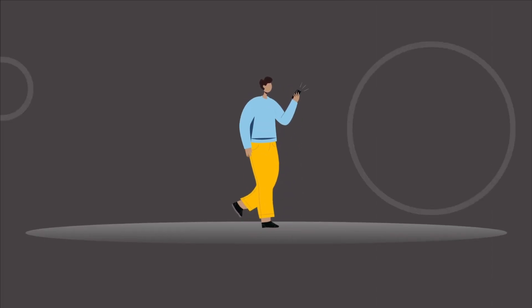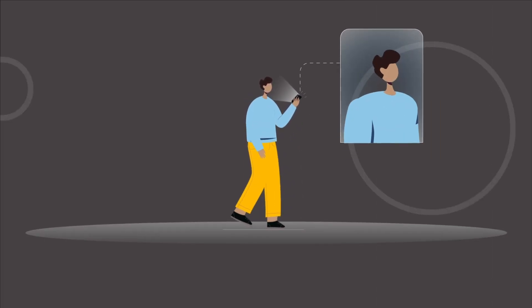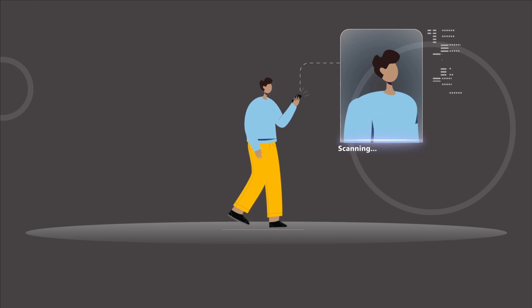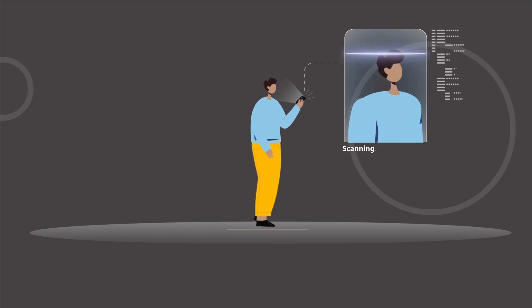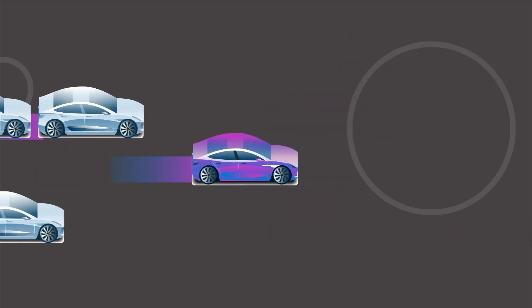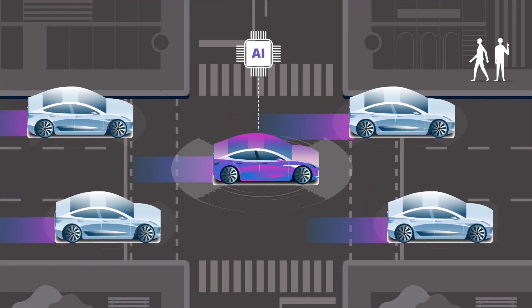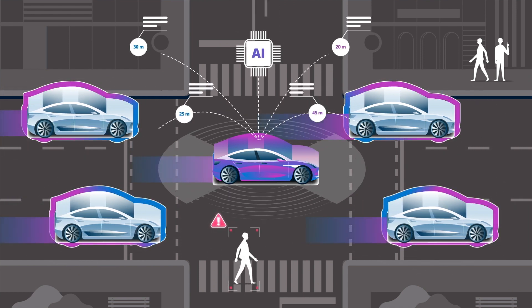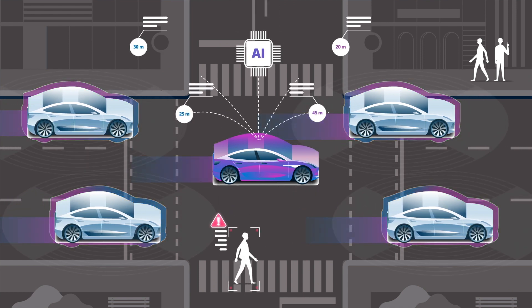You use facial recognition when using Face ID to access mobile devices or computer systems. Self-driving cars use object detection and tracking to monitor the car's surroundings and adjust routes accordingly.